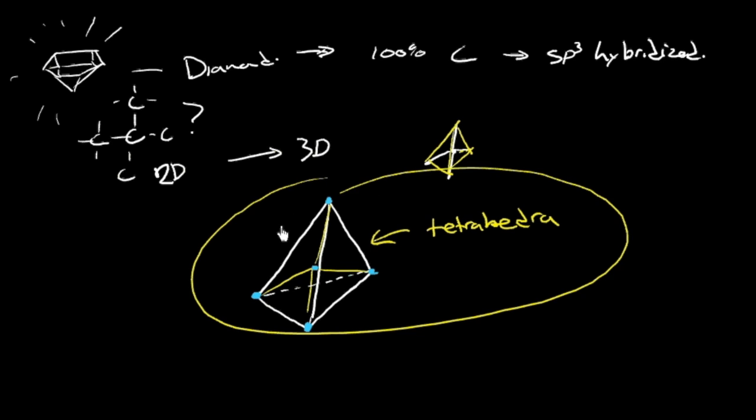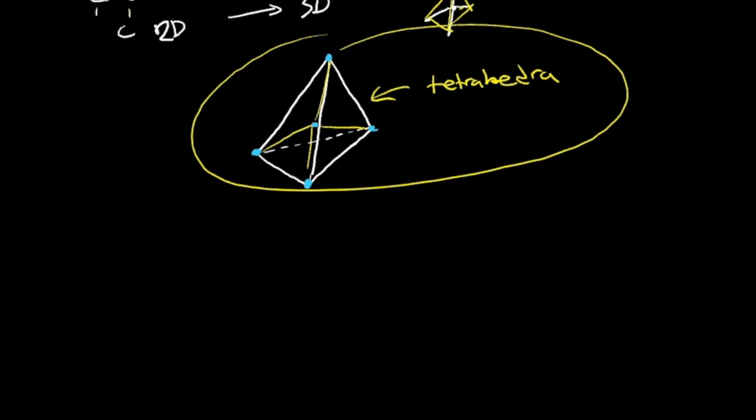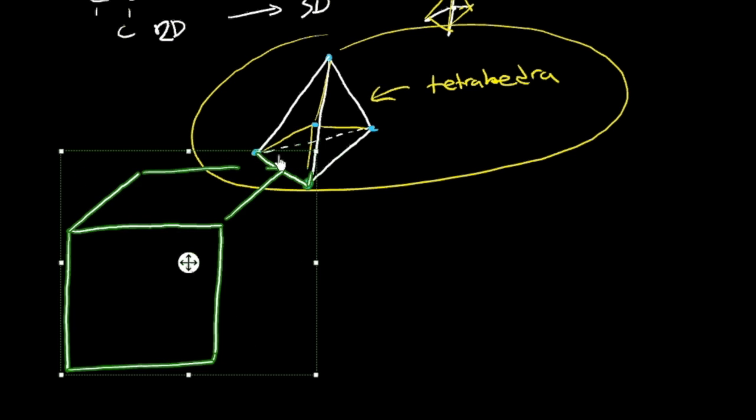But our human minds, our human brains, sometimes like to make things a little bit simpler, if we can, to visualize. I mean, we could just say that's the structure of diamond, and that repeats. But you can actually, when you introduce a few more carbon atoms, you realize that there's actually a cubic symmetry to it. And that's nice, because we like simple geometry.